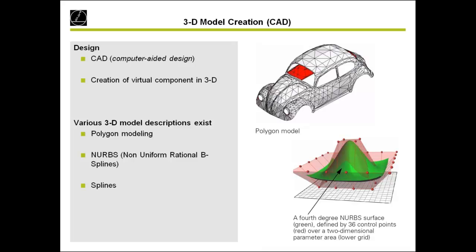Another way is NURBS — Non-Uniform Rational B-Splines. It is like a shirt: you put different points where you hold the shirt, and if you move one point, the complete contour changes. It is very good for long or flat surfaces, for example the roof of a car. However, it is not so good for detailed contours with sharp corners — there it is better to use polygon modeling. For a mathematical input, you can use splines, for example for airplanes where you can use fixed forms.